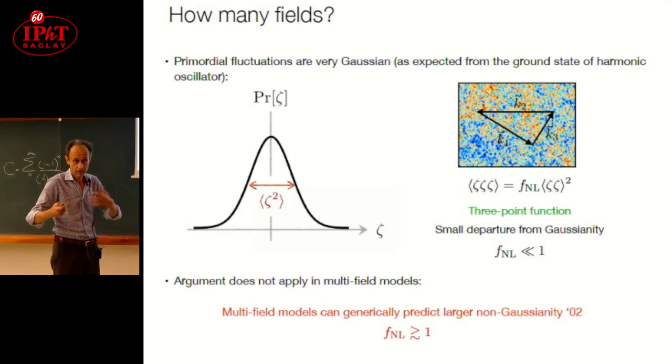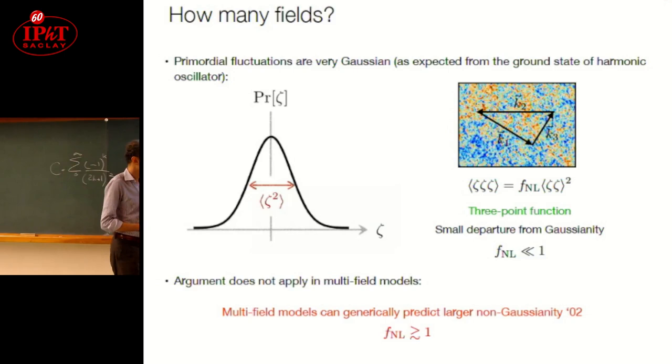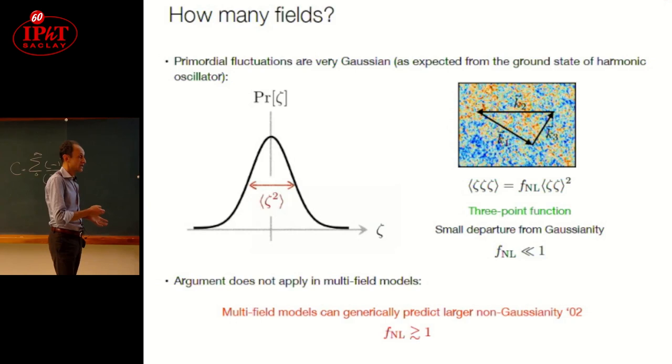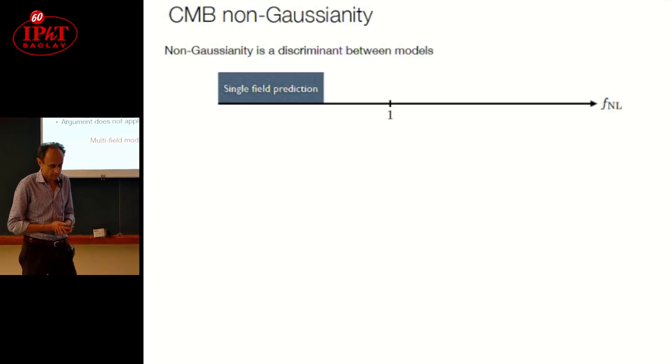This argument does not apply to multi-field models, does not apply when you have several scalar fields during the universe. This was realized, I was not here at the time, but it was one of the first papers by Francis to predict that fNL can be larger, over one or larger, for models where there are more than one field.